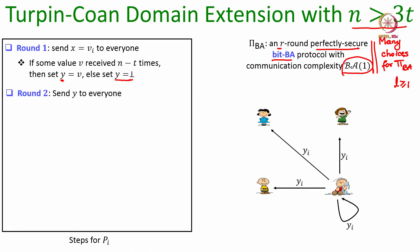During the second round, every party sends their version of the variable Y to everyone. Party P_i's version Y_i — either an L-bit binary string or the value bot — is sent to everyone. Of course, if P_i is corrupt it may send arbitrary values as Y to different honest parties — for instance, bot to one set and value V1 to another. But if P_i is honest it will stick to its version of Y while sending to different parties.